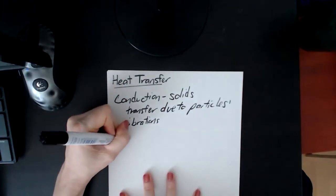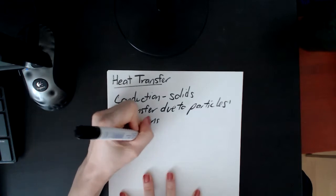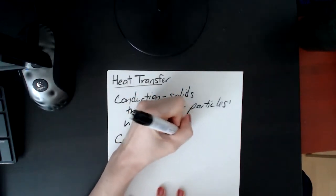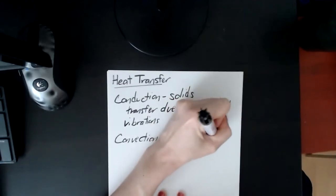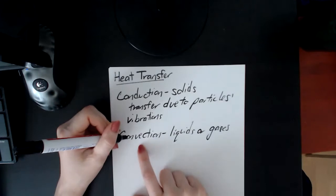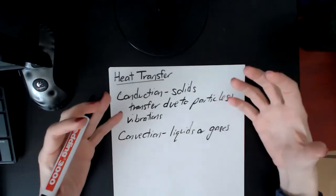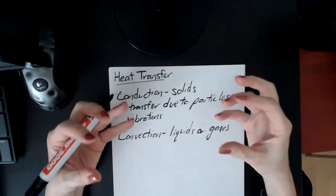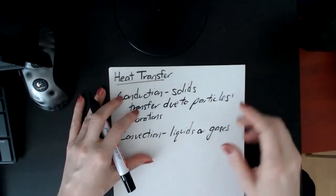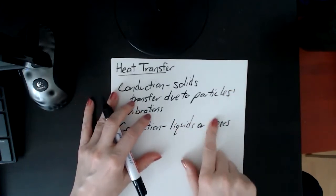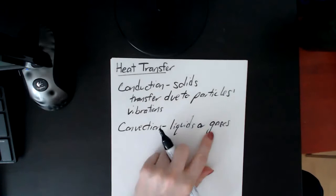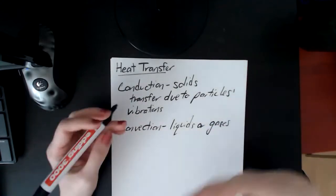The next one is convection, and this is probably the one that takes the longest to talk about. This can happen in liquids, like in water, or in gases, like air. In solids, the particles are packed very tightly in a rigid formation, and so they can't go anywhere. Liquids and gases are not as rigid - in liquids they're moving around over top of each other, sliding past one another, and in gases they're colliding with each other, bouncing around.